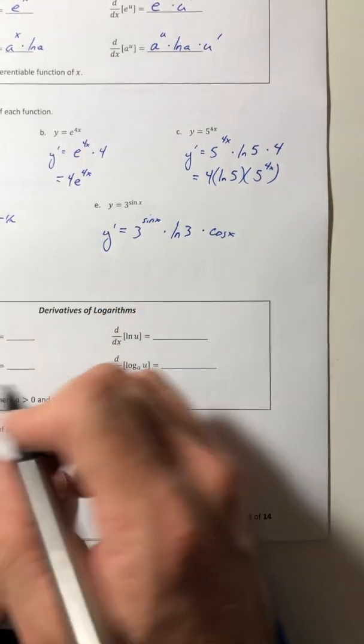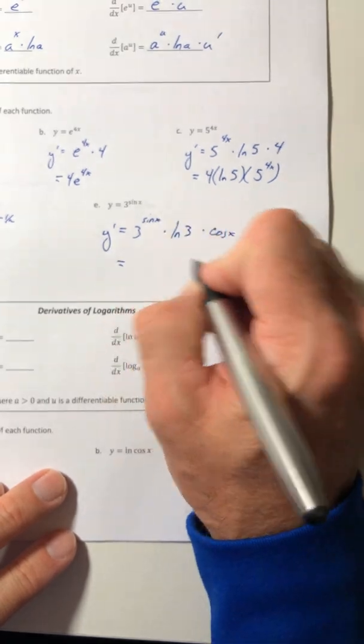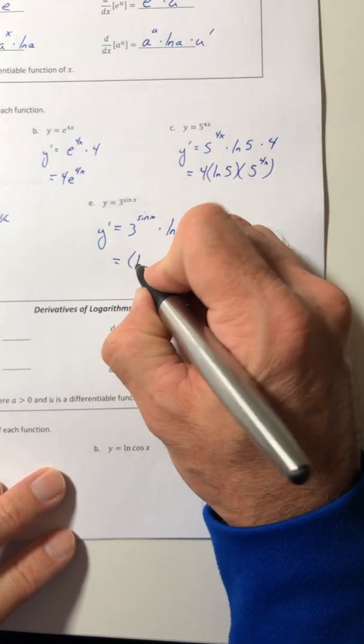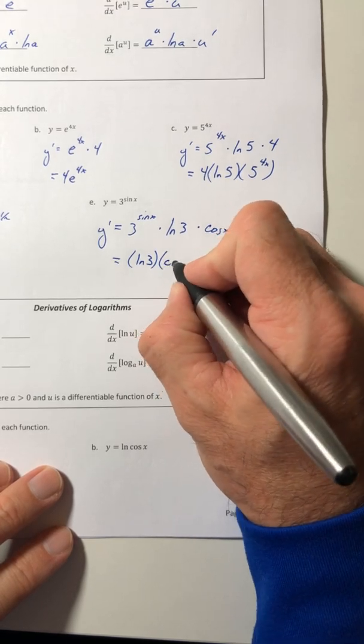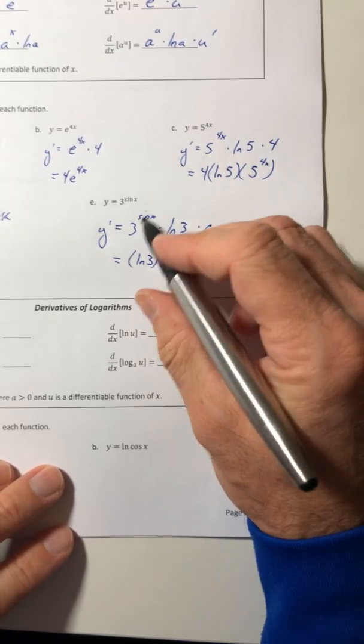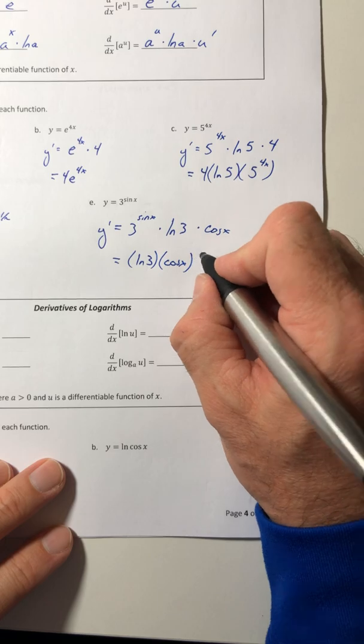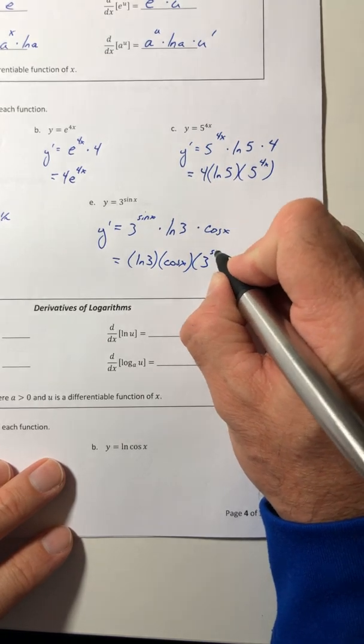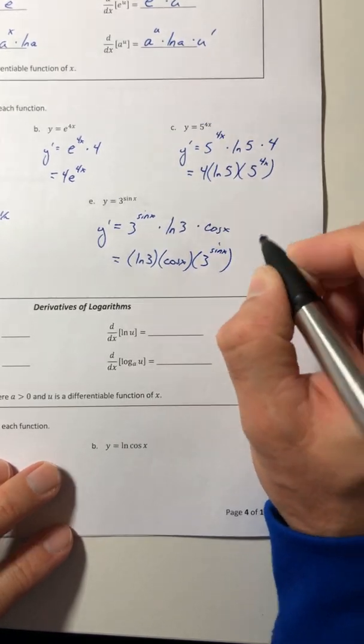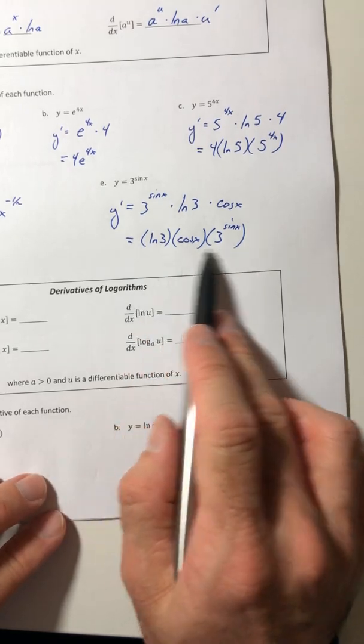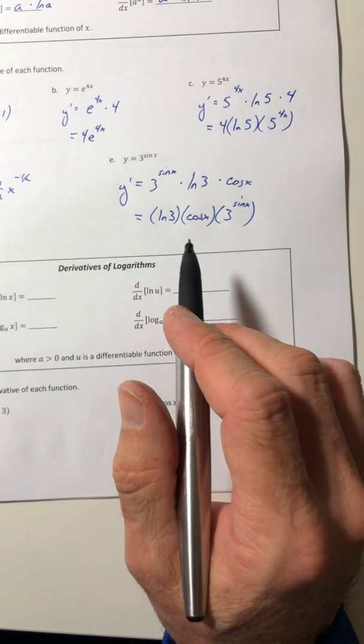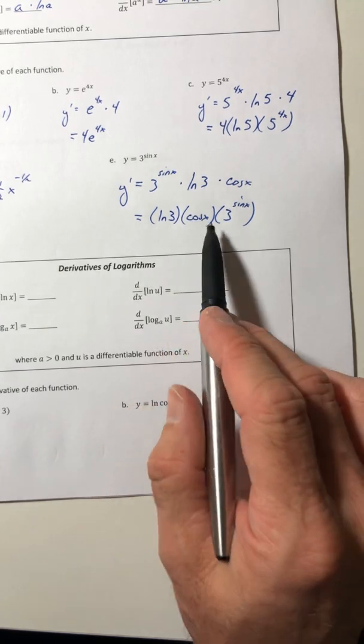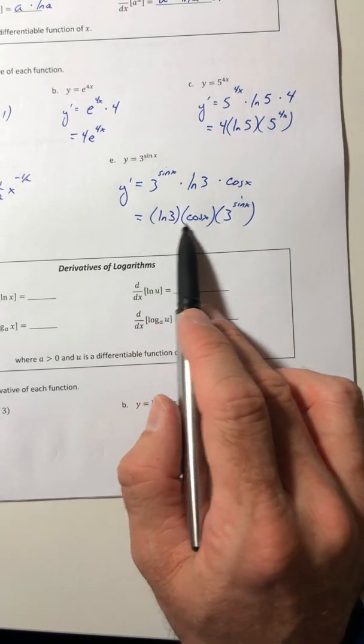And then just kind of clean it up as best as you can. So put the ln of three out in the front, followed by the trig function, and then the exponential. The order doesn't matter because it's all multiplication, so you could have the ln of three in the back if you wanted. Just, to me, it looks a little bit nicer to have it written out this way, but choose whatever order you want.